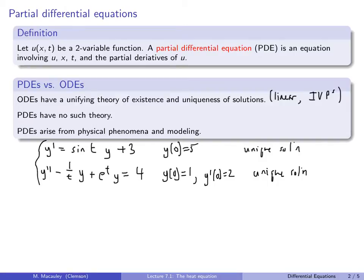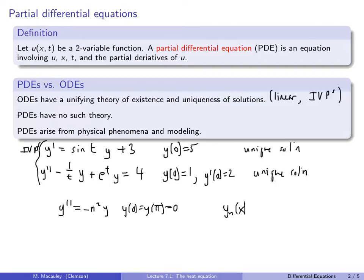These are both initial value problems. In contrast, boundary value problems are more unpredictable. We saw in the previous lecture this boundary value problem: y″ = −n²y, where y(0) = y(π) = 0. We saw that this does not have a unique solution — this has infinitely many solutions. We have y_n(x) = sin(nx) for any integer n, so here we have infinitely many solutions.